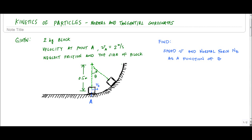Welcome back. In this video we're going to work on kinetics — particle kinetics using normal and tangential coordinates, really just using Newton's second law with NT coordinates. In this problem we've got a block with a mass of two kilograms sliding along a path. It hits this ramp at point A with a velocity of two meters per second, and we can neglect friction and the size of the block.